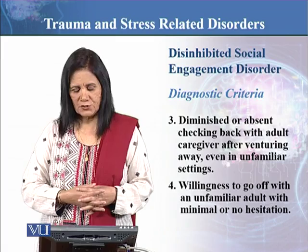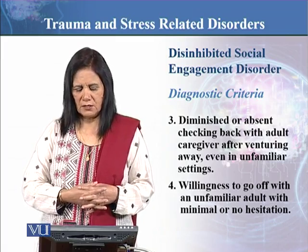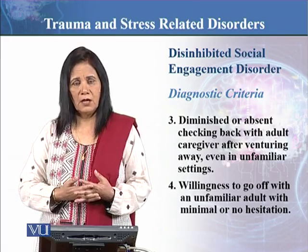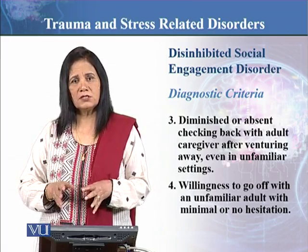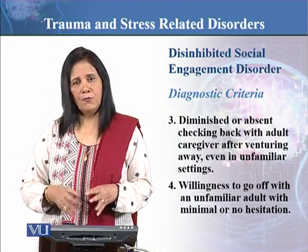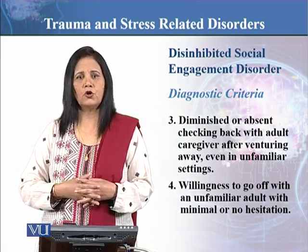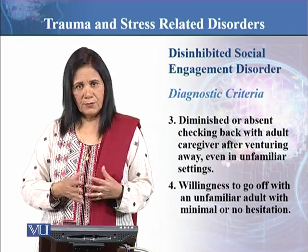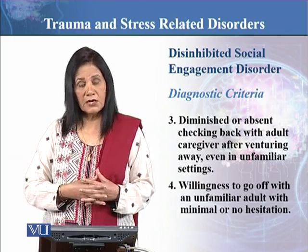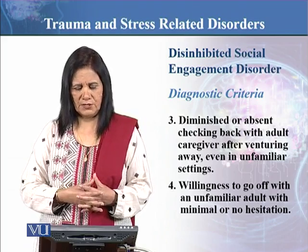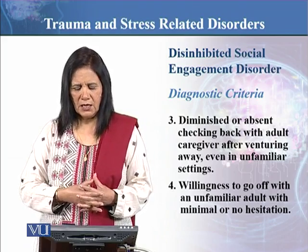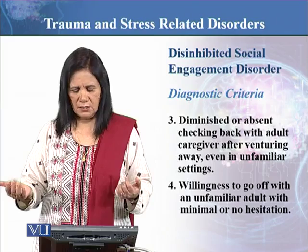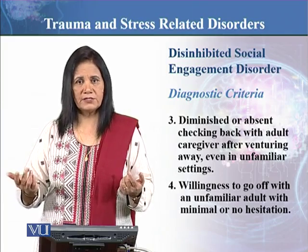Number four is willingness to go off with an unfamiliar adult with minimal or no hesitation. These children can be at risk of being abducted or abused. This is why parental and caregiver vigilance is very important. These children are willing to go off with any unfamiliar adult with minimal or no hesitation.